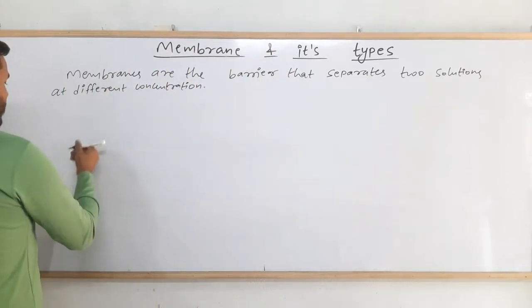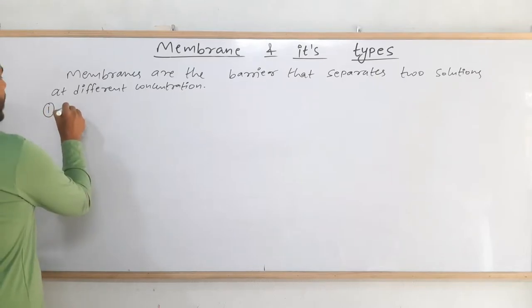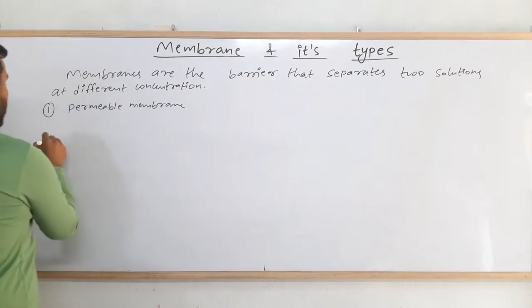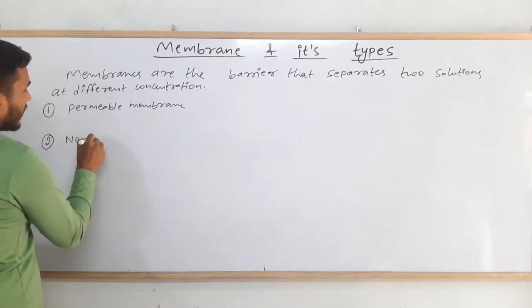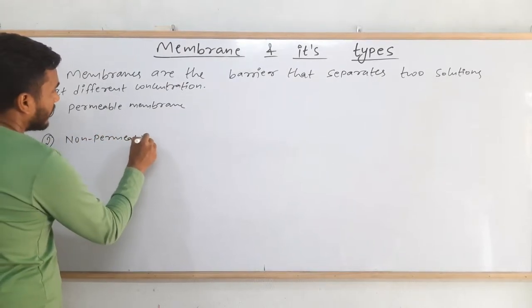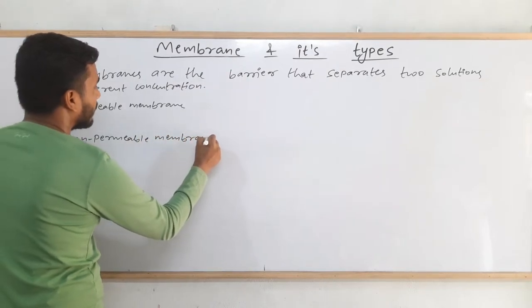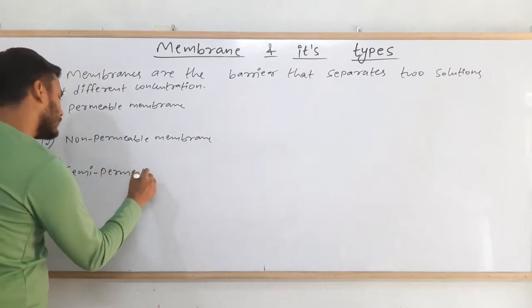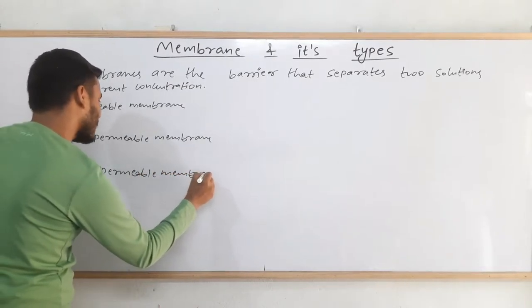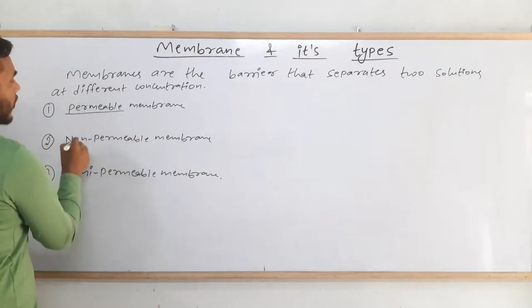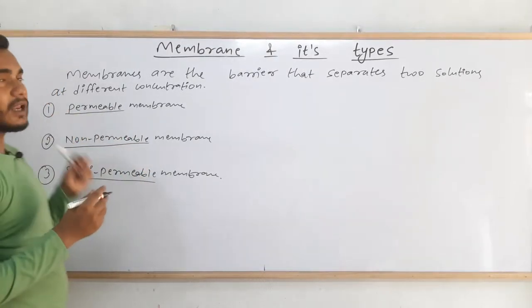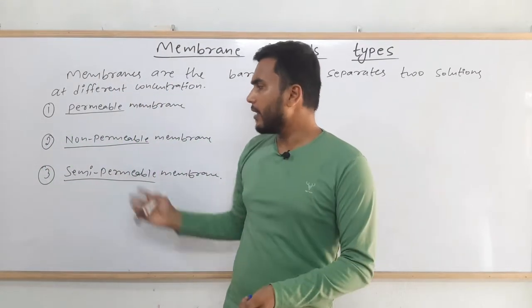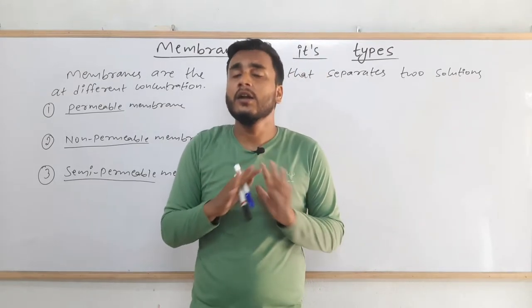There are three types of membranes. The first one is permeable membrane, the second one is non-permeable membrane, and the third one is semi-permeable membrane. The word permeable comes from permission. So permeable membrane will allow everything to pass through it, non-permeable membrane will allow nothing to pass through it, and semi-permeable membrane will allow some things to pass through it but not others.